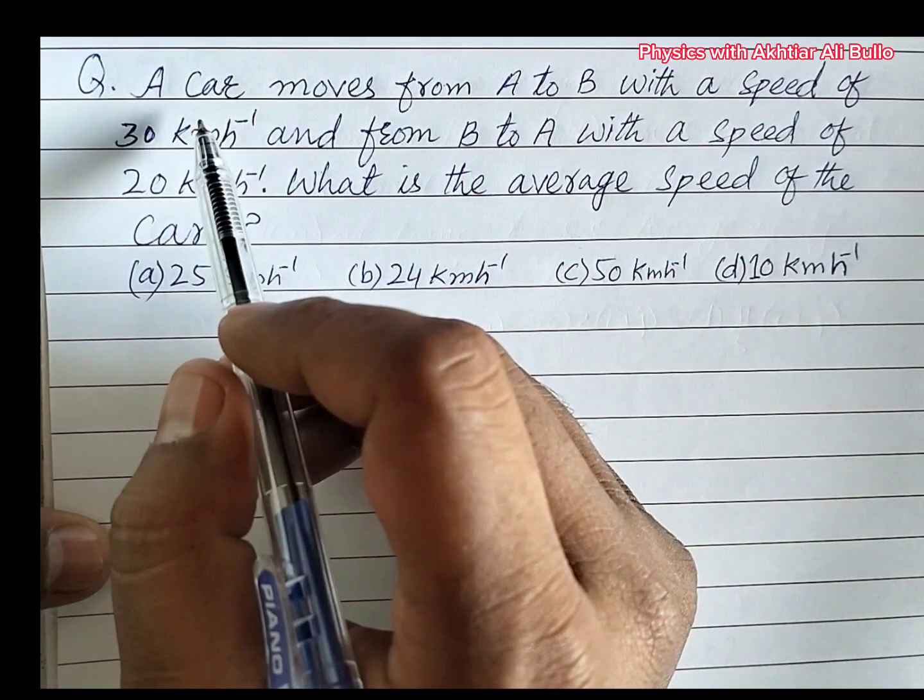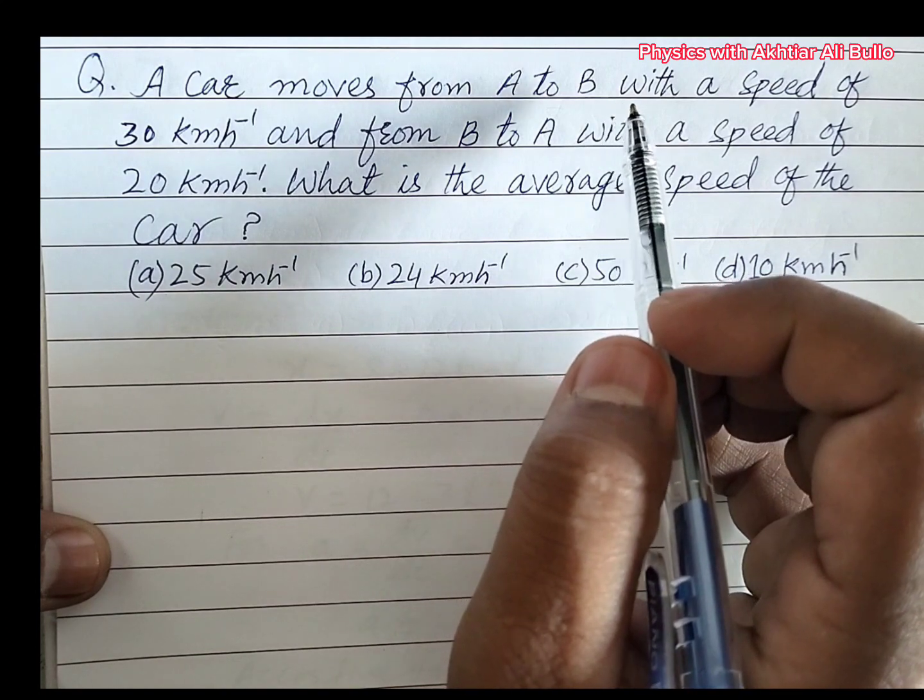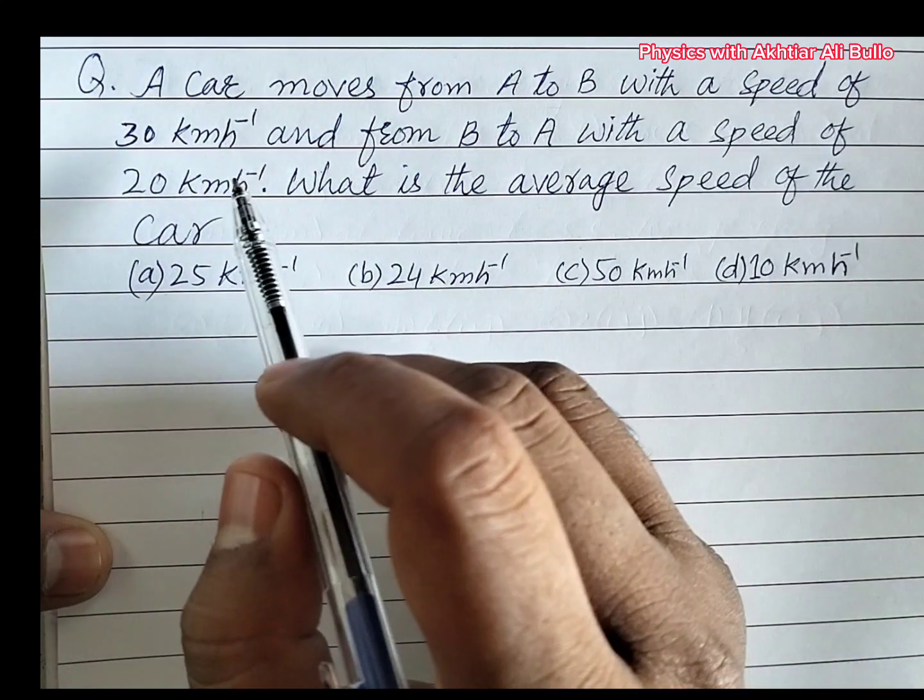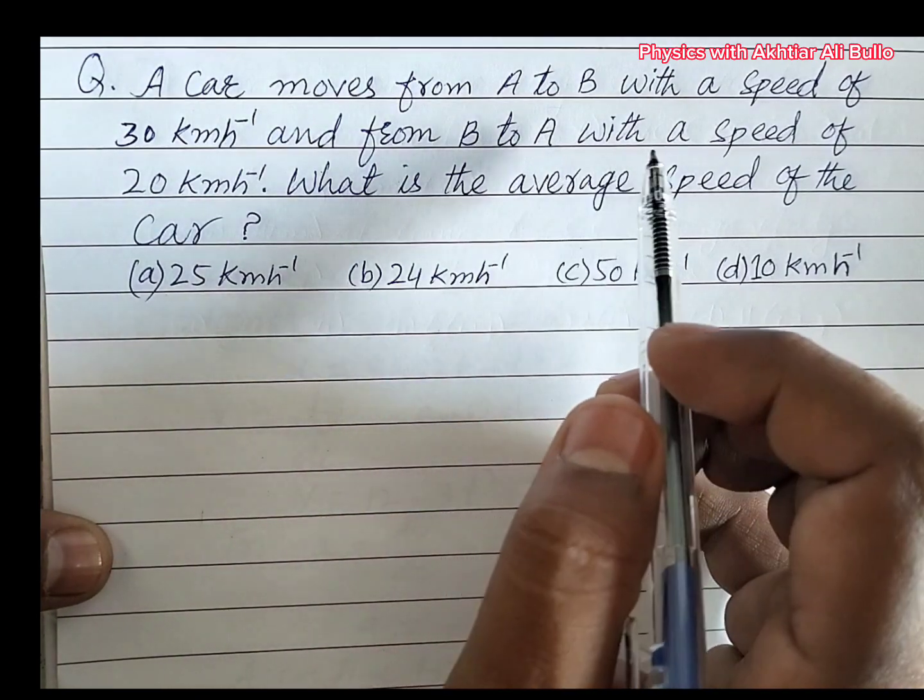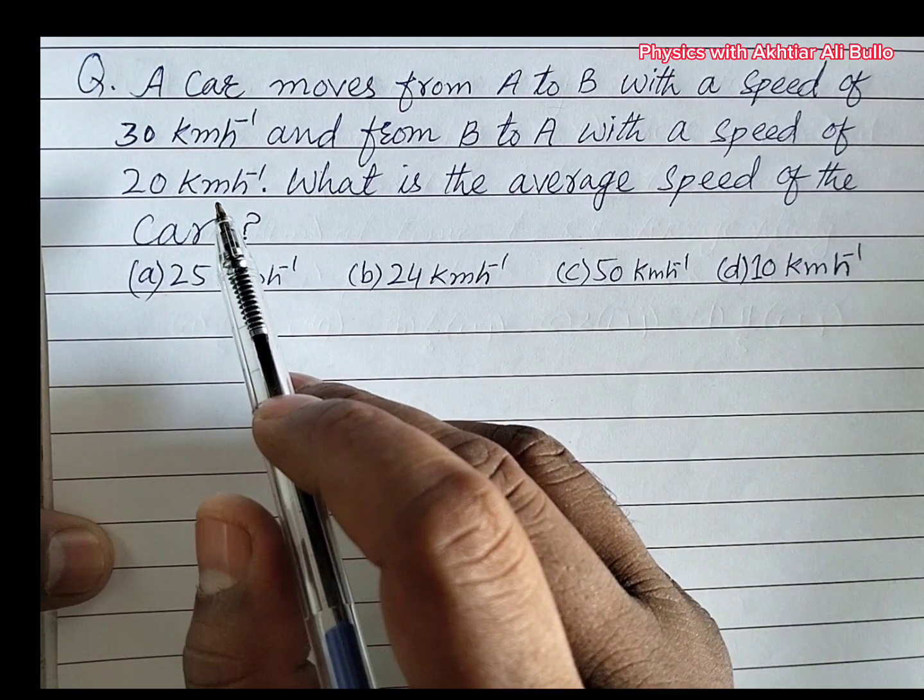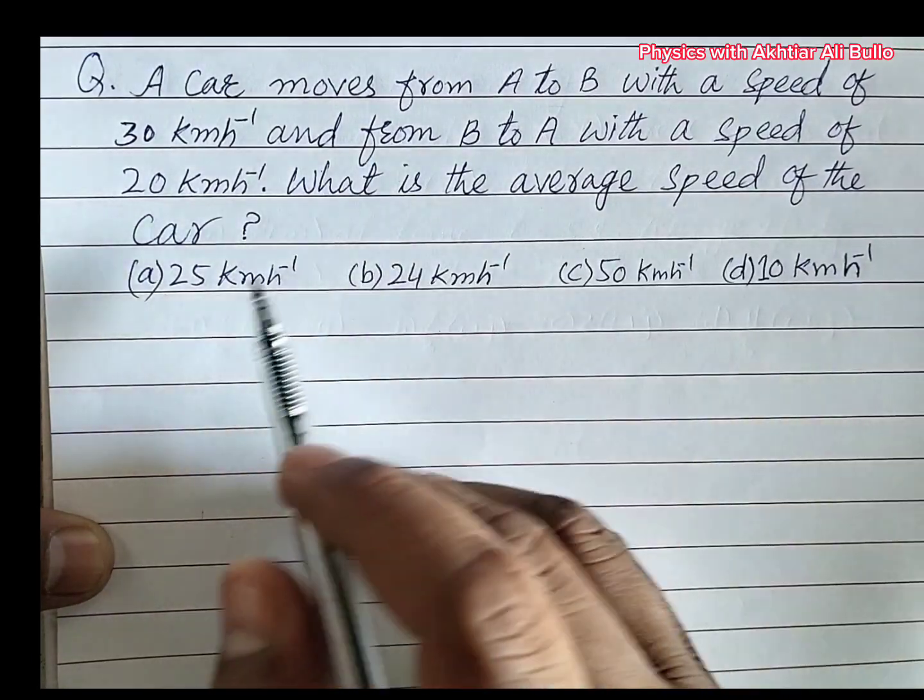The question is, a car moves from A to B with a speed of 30 km per hour and from B to A with a speed of 20 km per hour. What is the average speed of the car?